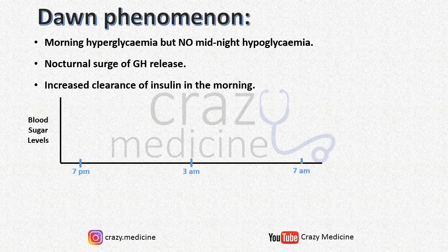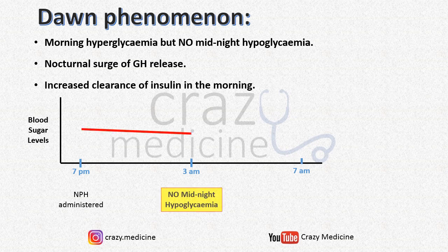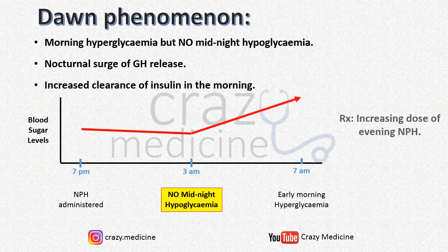Let me show graphically. Suppose at 7 pm NPH is administered which is insufficient to maintain glucose levels at midnight, so slowly sugar levels will increase, causing fasting hyperglycemia in the morning. So treatment should be to increase the evening dose of NPH, in contrast with reducing the dose in Somogyi phenomenon.